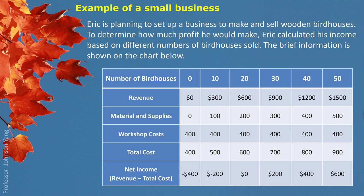The production levels shown are 0, 10, 20, 30, 40, and 50. The corresponding revenue, costs, and income are all calculated in this chart.